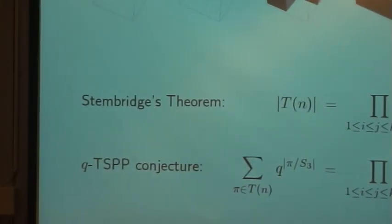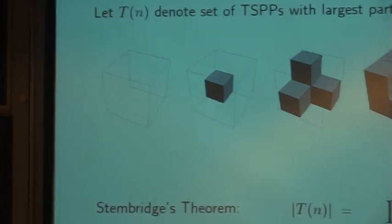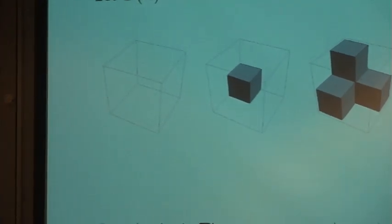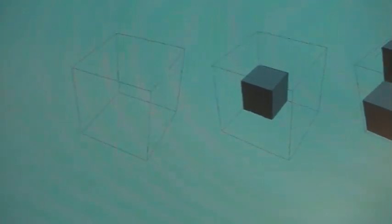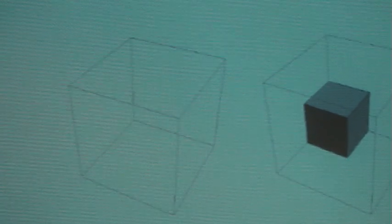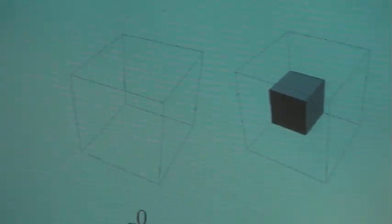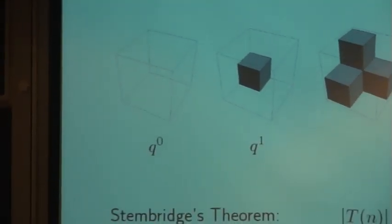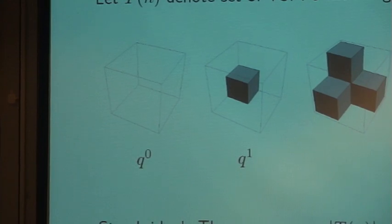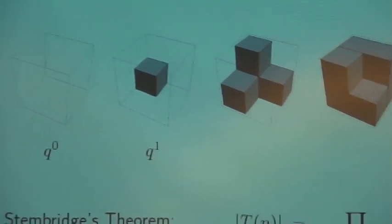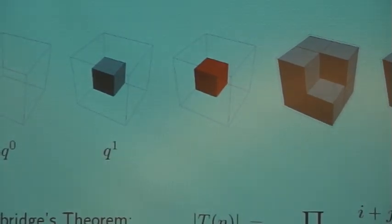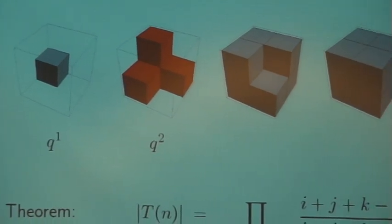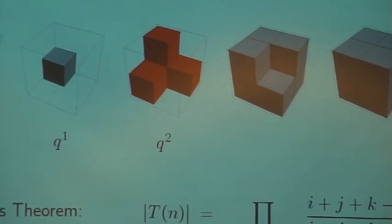Let me demonstrate it with these pictures here. In the first picture, this is the empty plane partition - obviously we do not have any orbit because there are no cubes at all, so we have zero orbits and encode this as q to the zero. In the next case, clearly we have one orbit encoded as q to the one. The next example, we have this orbit and these three cubes form an orbit, so we have q squared.